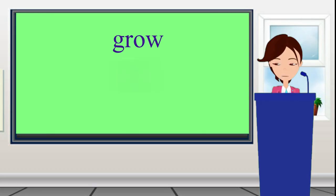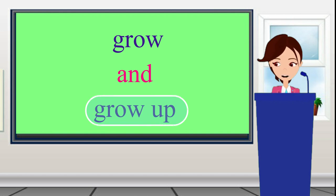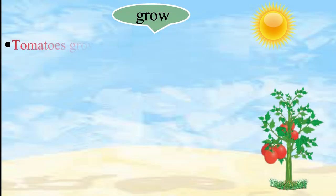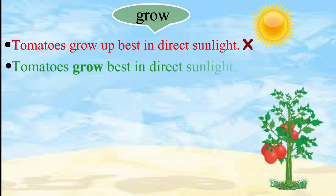To grow and grow up. To grow means to become bigger, and to grow up means to develop into an adult. For example, we should not say 'Tomatoes grow up best in direct sunlight.' We should say 'Tomatoes grow best in direct sunlight.'